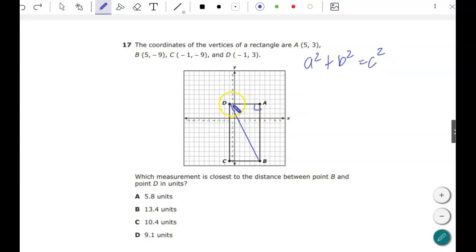So on the distance here count the spaces 1, 2, 3, 4, 5, 6. And then going down it's 1, 2, 3. It's hard to see here. 4, 5, 6, 7, 8, 9, 10, 11, 12.